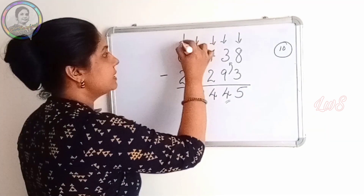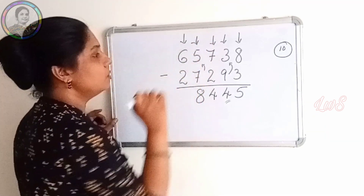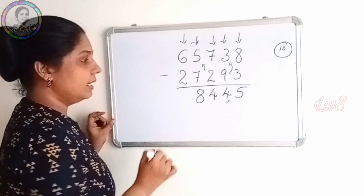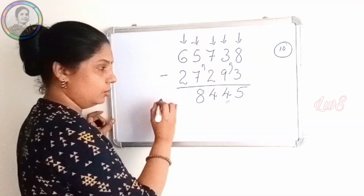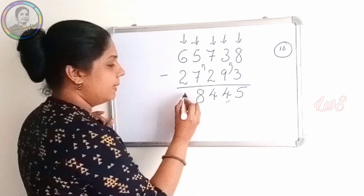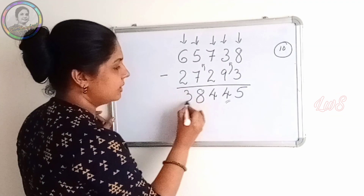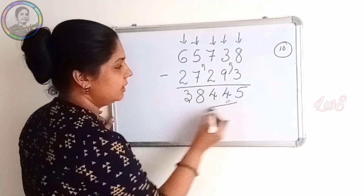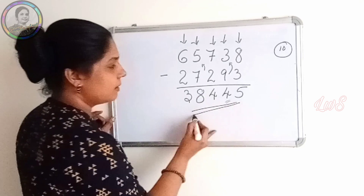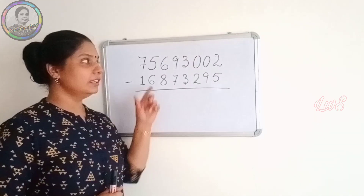Now 6 minus 2, actual subtraction, is 4. But we write 4 minus 1, which is 3.